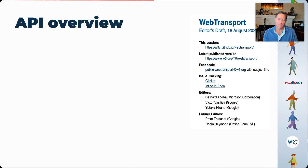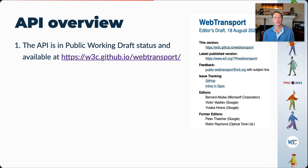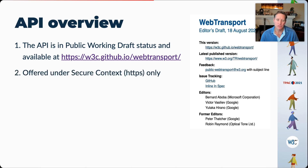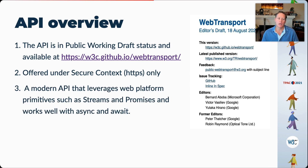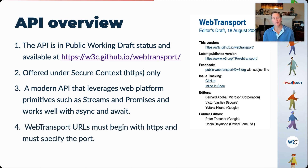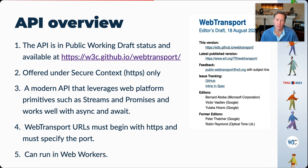There is an API that exists for this, and it's quite exciting — you can access all of this functionality from within a browser user agent. The API is in public working draft status, and it is offered under secure context only, as are most modern APIs, especially those concerning audio and video. The API leverages modern web platform primitives such as streams and promises, and works well with async and await, which programmers prefer. Web Transport connection URLs must begin with HTTPS and must specify the port being connected to on the server side. It is a client-initiated connection, and it can run in web workers, allowing multi-threaded applications for higher performance.